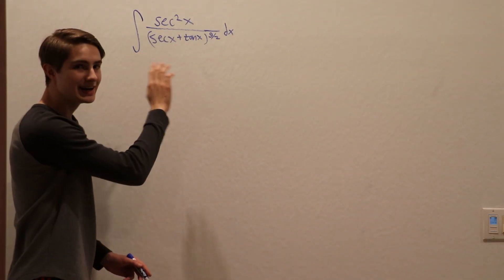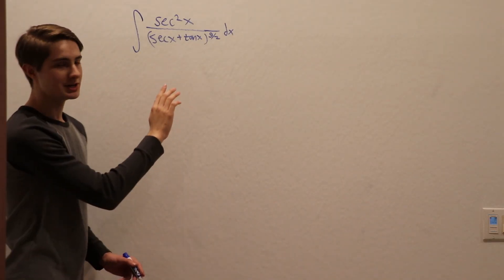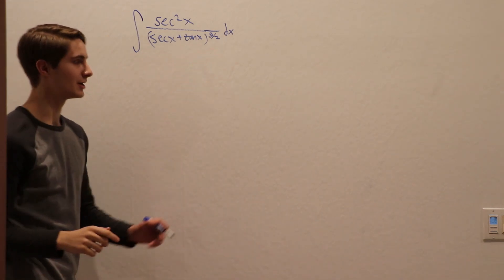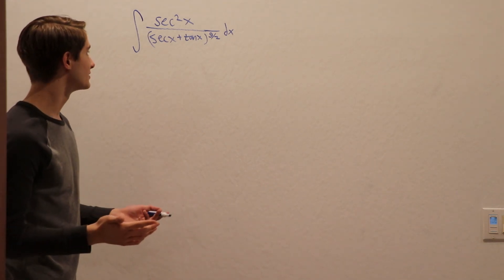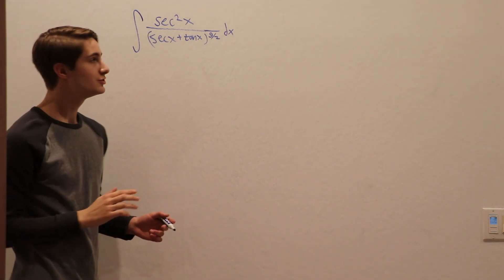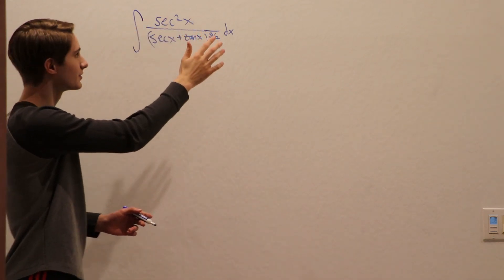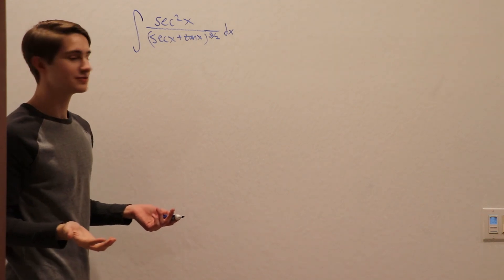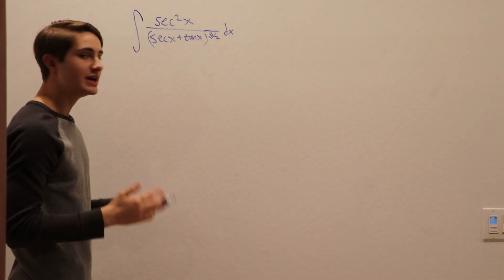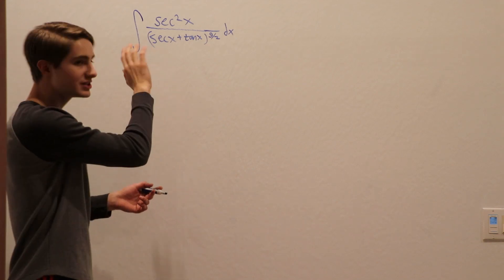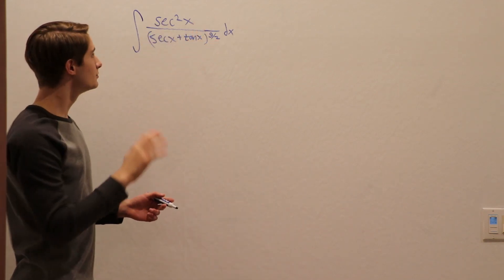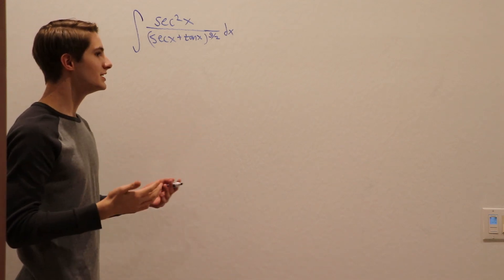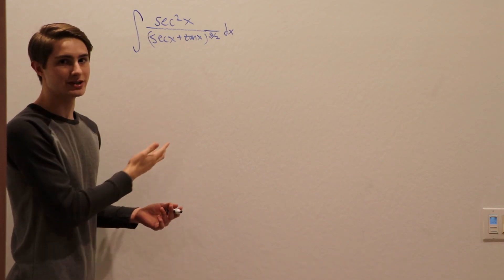We're going to do this integral that someone at the IIT JEE exam writing committee cooked up: the integral of secant squared of x over secant x plus tangent x to the 9 halves power. Blackpenredpen inspired me to make this video, but when I saw his video on this integral, he was doing so much stuff — moving things around on the top and using identities — and I thought, I am way too stupid to think of something like that. So is there any way to do this integral that doesn't require so much futzing around with the numerator, something that would come to you easier on a timed exam?